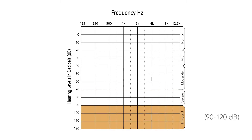Finally, at profound, hearing levels will be at 90 to 120 decibels. Here, it is extremely difficult to hear most forms of communication in any sort of environment, and you may need to use a visual aid such as sign language or lip reading to hear what is being said from others.